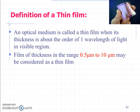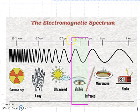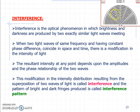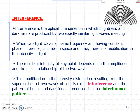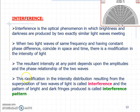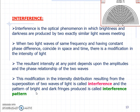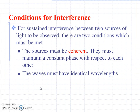The thickness of a thin film is in the range of 0.5 micrometers to 10 micrometers, considered as a thin film, within the visible spectrum wavelength range. The definition of interference: two light waves which are superimposed with each other and produce constructive and destructive interference — this modification resulting from the superposition of two waves is called interference, and the resulting pattern of bright and dark fringes is called the interference pattern. Conditions for interference: light should be monochromatic and coherent. Coherent means it produces a constant phase difference with respect to each other, and it must satisfy the superposition principle.